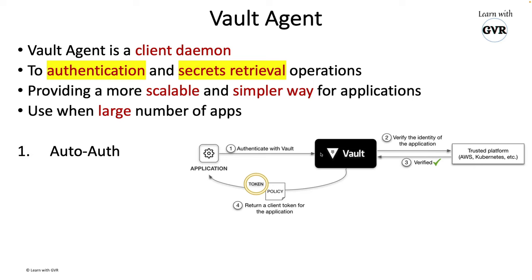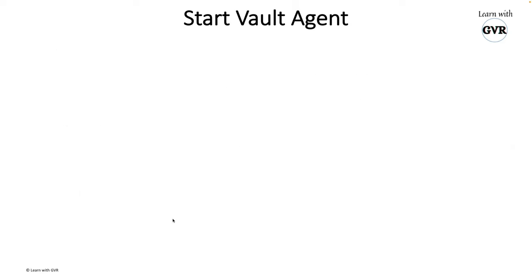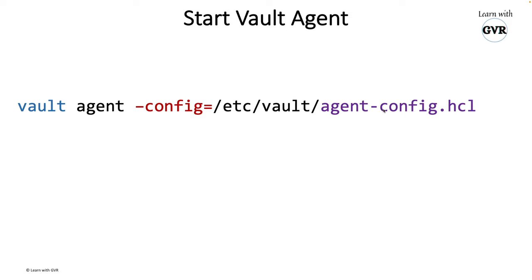Vault Agent provides four different features: number one is automatic authentication — that's the main purpose. Number two, Vault Agent supports caching. Number three, Vault Agent supports templating, which we'll see in upcoming slides. And number four, you can use it as a Windows service if your system is Windows.